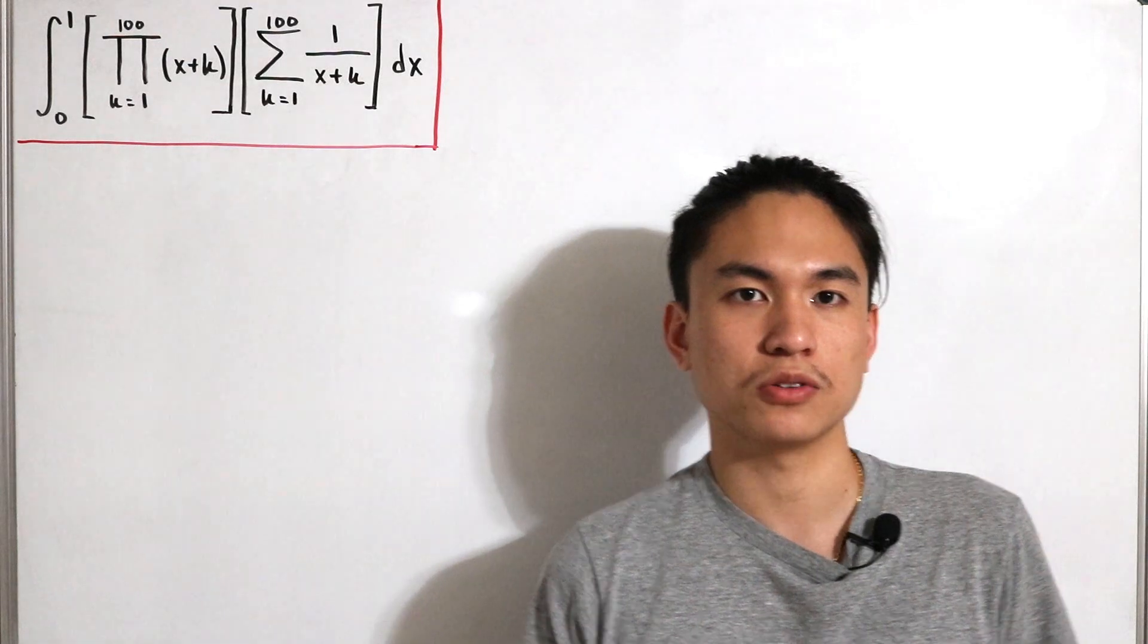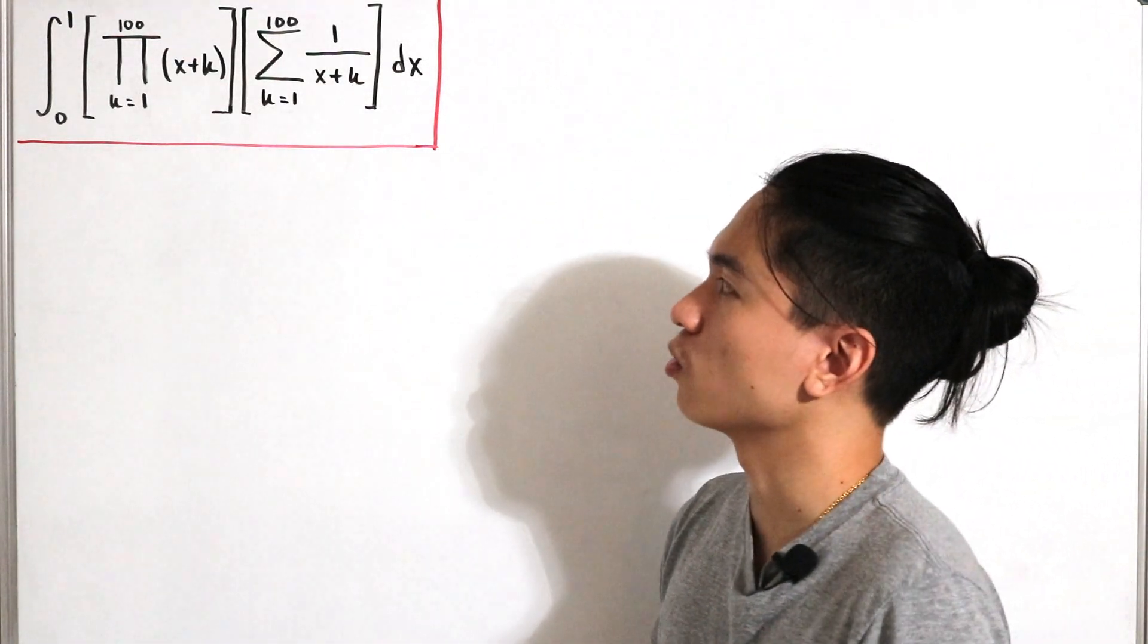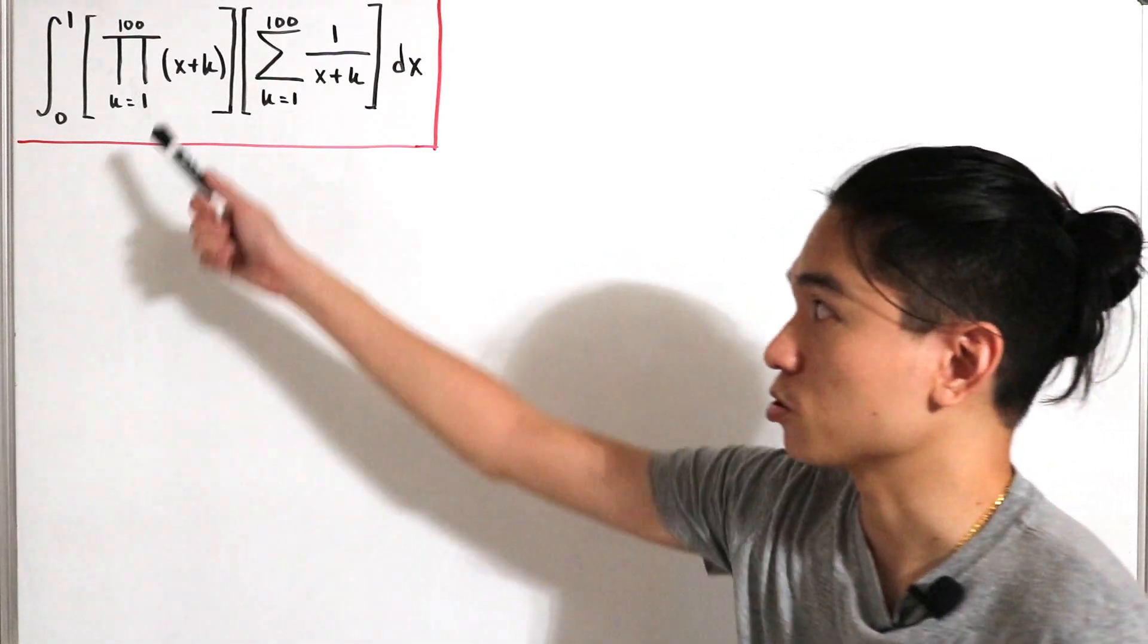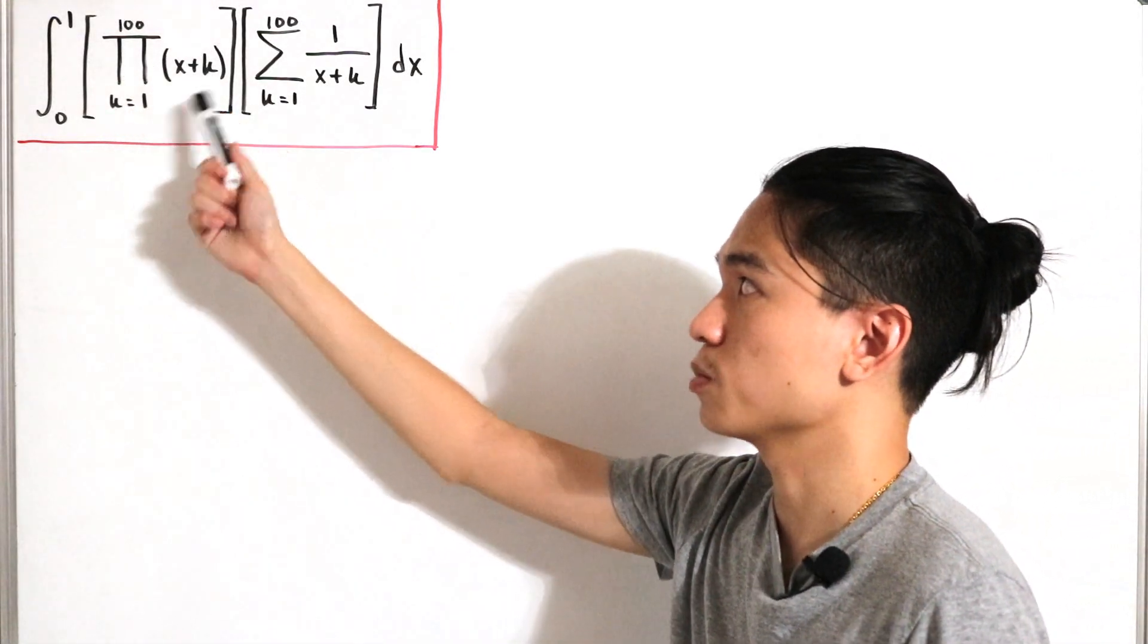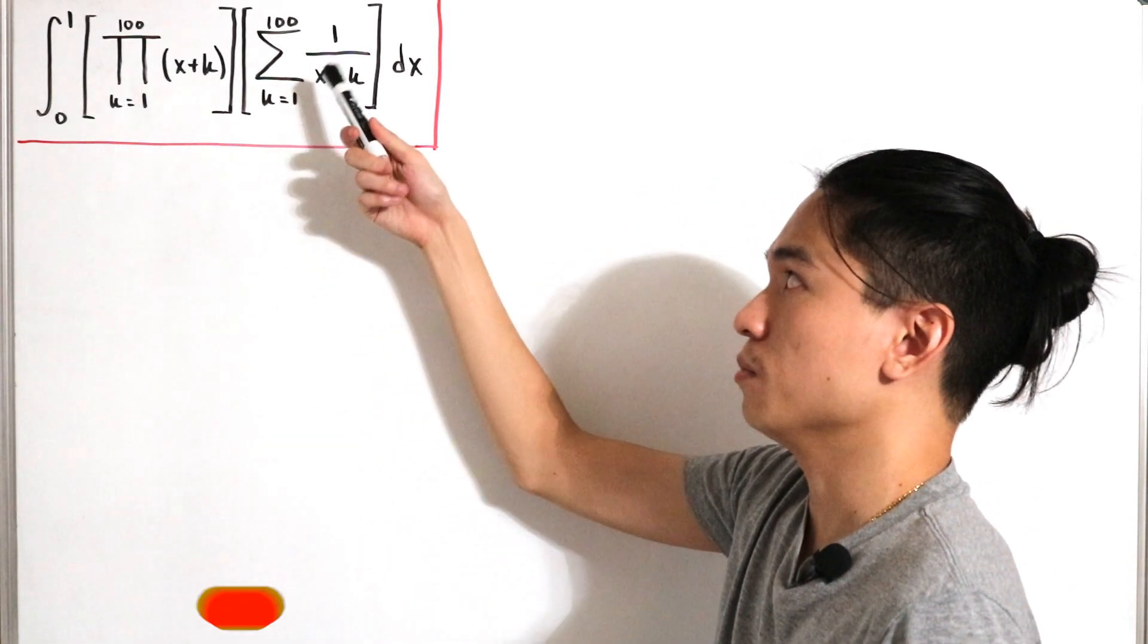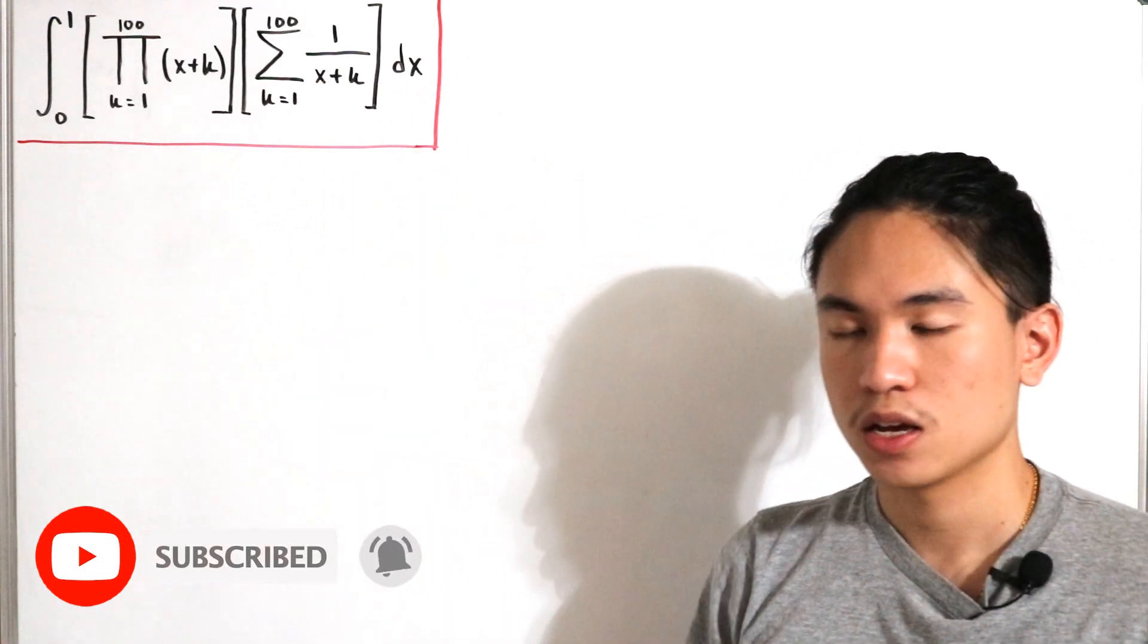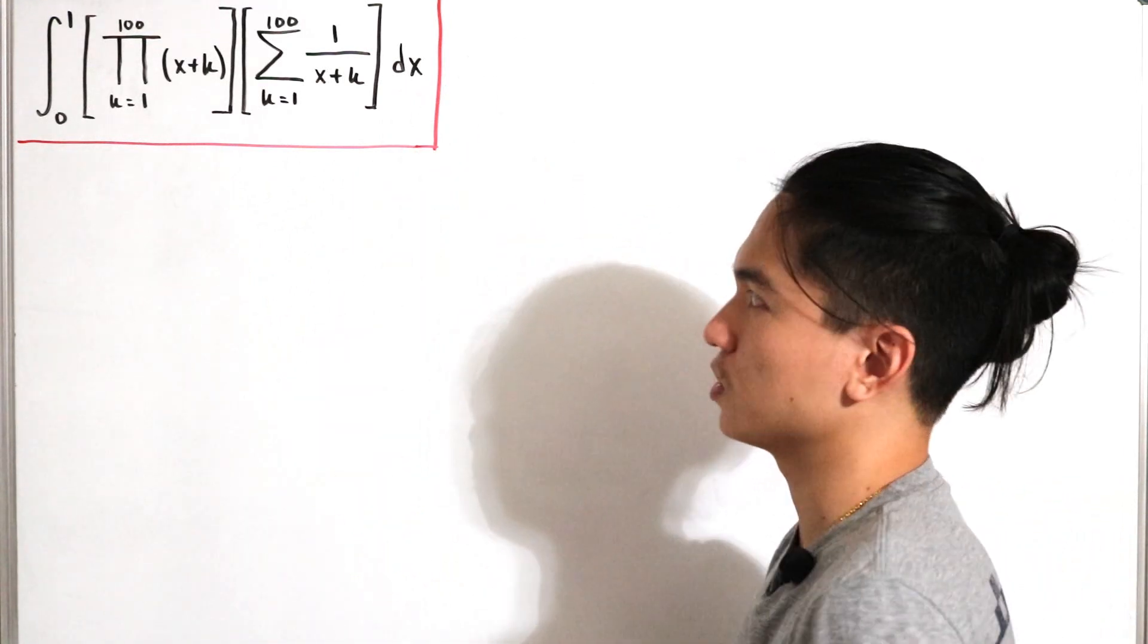Okay, so welcome back to another video. In today's video we have the following definite integral from zero to one of the partial product of x plus k with the upper bound at 100, multiplied with the partial sum of 1 over x plus k with upper bound of 100, dx.